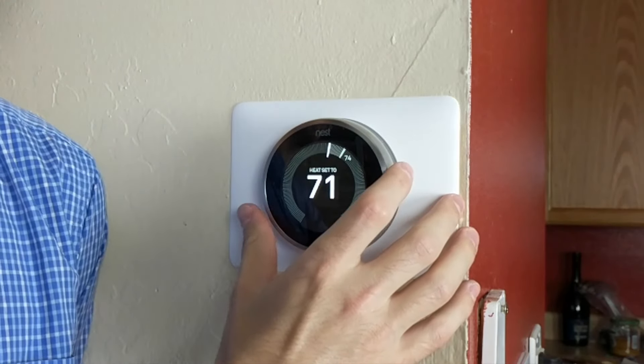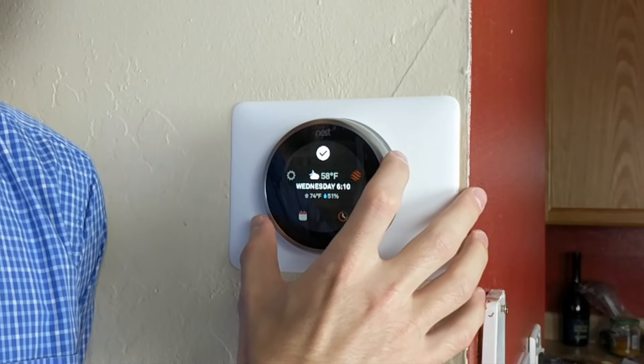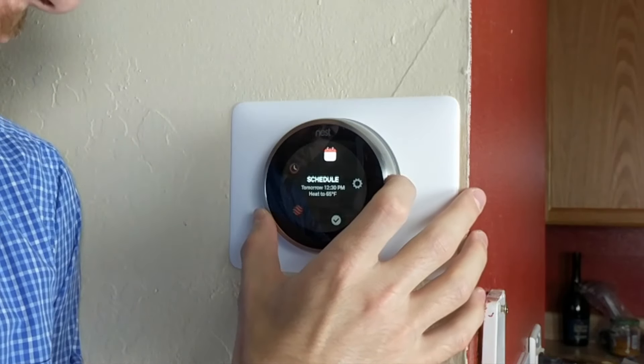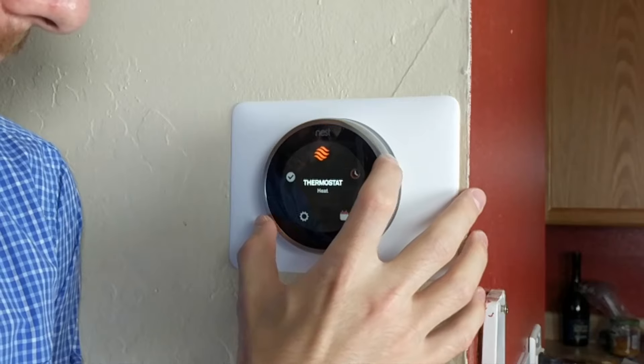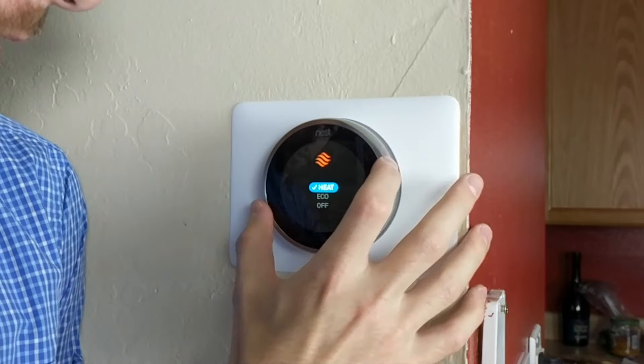If you want to change from heating to air conditioning, simply press that ring around the device, turn it to the heating and air conditioning icon like so, turn around to your desired mode and press in.